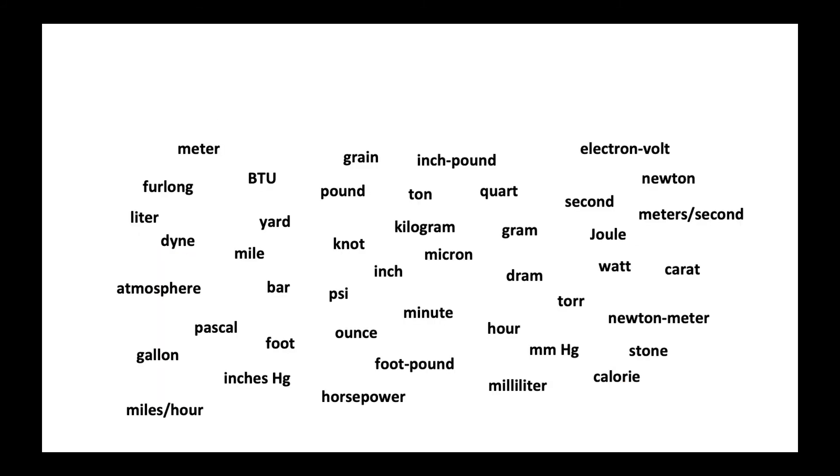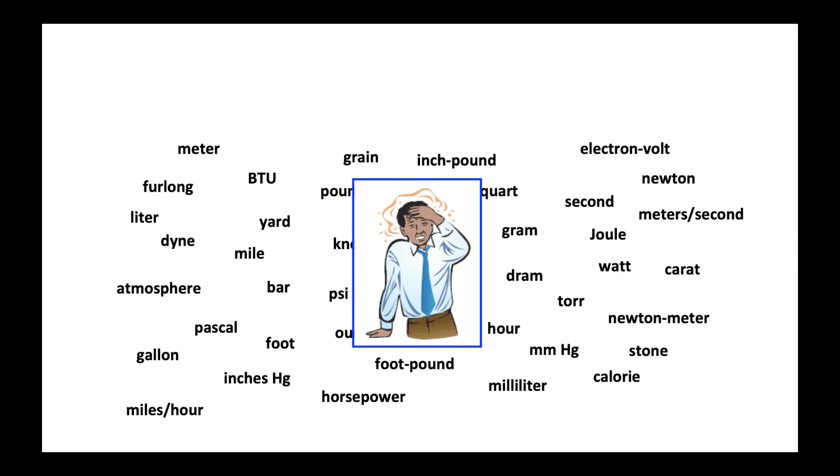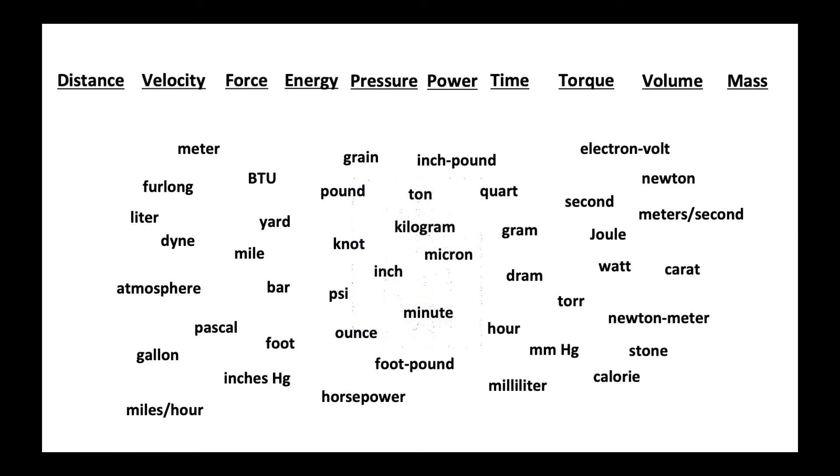There is a bewildering number of terms which are used to describe things like distance, velocity, force, energy, pressure, power, time, torque, volume, and mass. We're going to go through this list and eliminate most of these and then slot the ones that remain under the correct column.